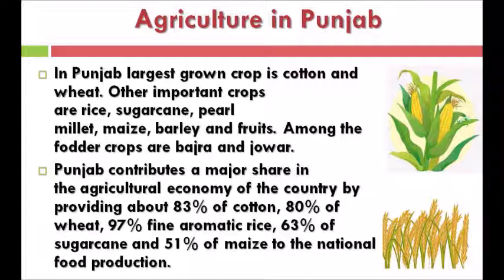Agriculture in Punjab: the largest grown crops are cotton and wheat. Other important crops are rice, sugarcane, pearl millet, maize, barley, and fruits. Punjab contributes a major share in the agricultural economy of the country, providing about 83% of cotton, 80% of wheat, 97% of fine aromatic rice, 63% of sugarcane, and 51% of maize to national food production.